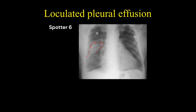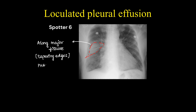This is a common clinical scenario in which we can see loculated pleural effusion along the major fissure. We can see the tapering edges, which show that this is a fissural effusion, also called a phantom tumour. It will also be associated with pleural effusion by blunting of the CP angles.